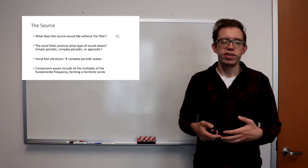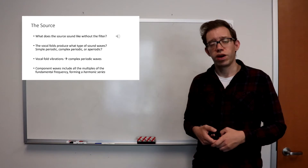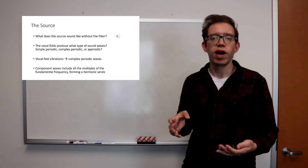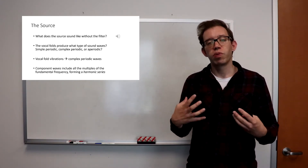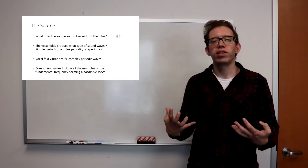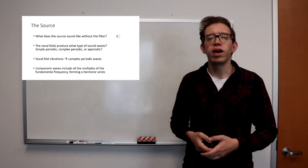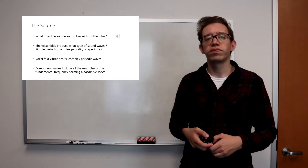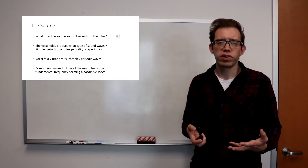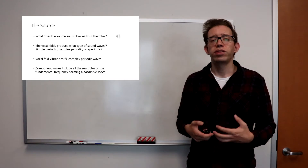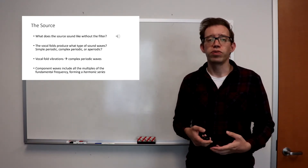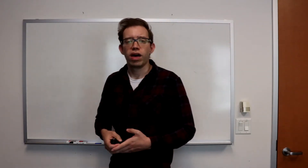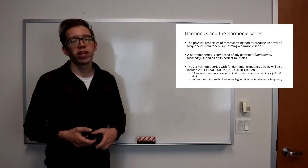The vocal fold vibrations produce complex periodic waves. It's something like a sine wave pattern, but we have multiple different component waves. You have this repeated periodic pattern, and it's made up of many component waves at different frequencies. So what are those frequencies that make up the source of sound from the vocal tract? A lot of vibrating bodies, including the vocal folds, produce what's called a harmonic series.